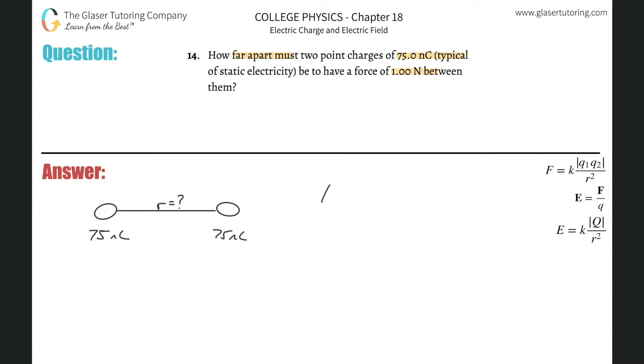The force of attraction, or excuse me, attraction or repulsion between two objects will equal the electrostatic constant k multiplied by the product between the two charges.